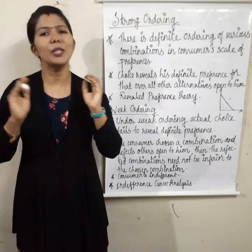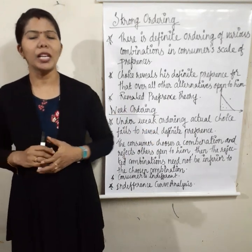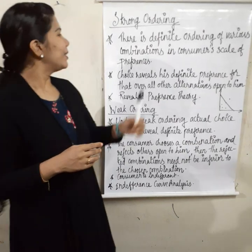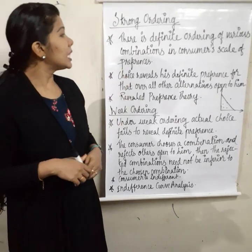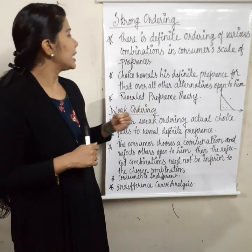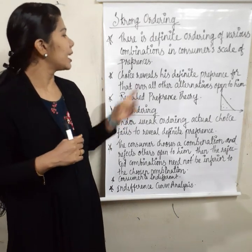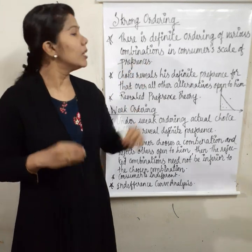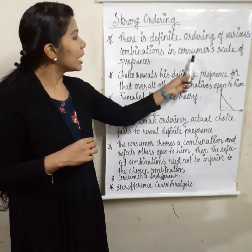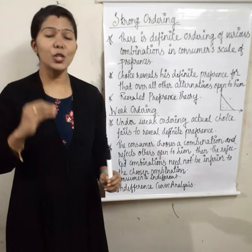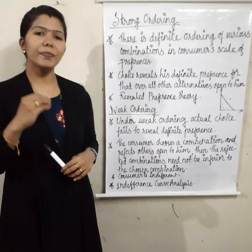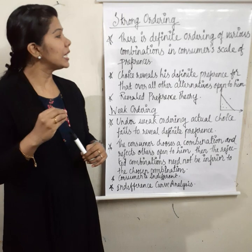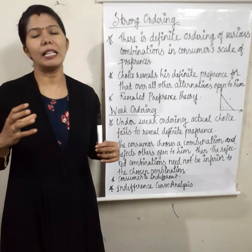Under strong ordering, the first point is: there is a definite ordering of various combinations in the consumer's scale of preferences. There is a definite ordering of various combinations in the consumer's scale of preferences.